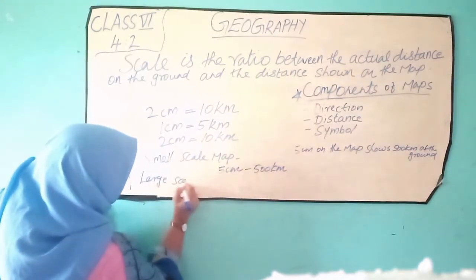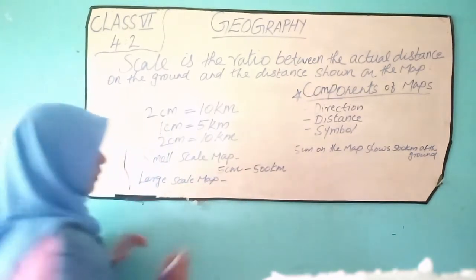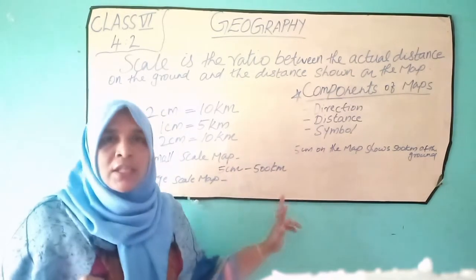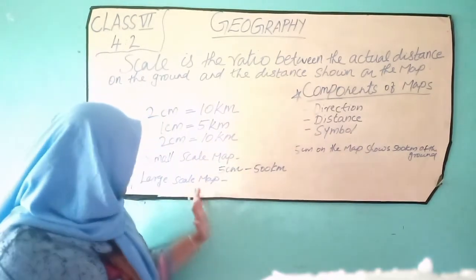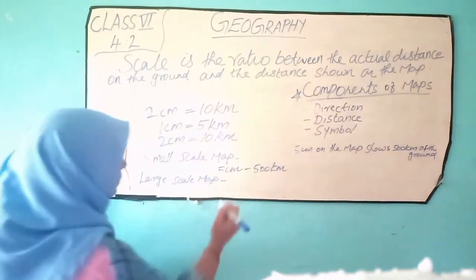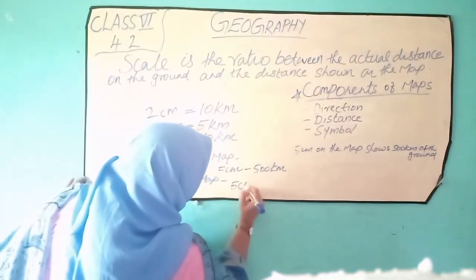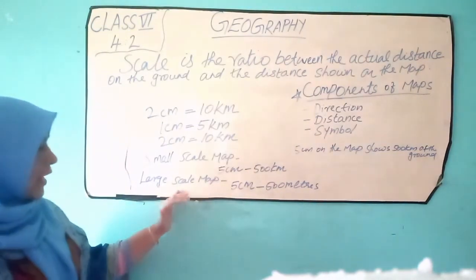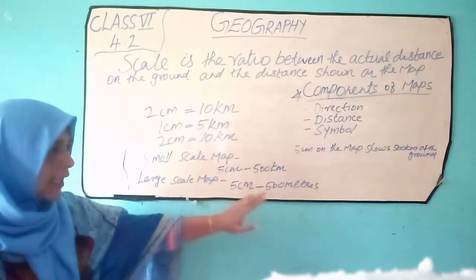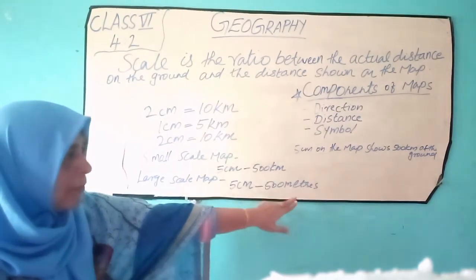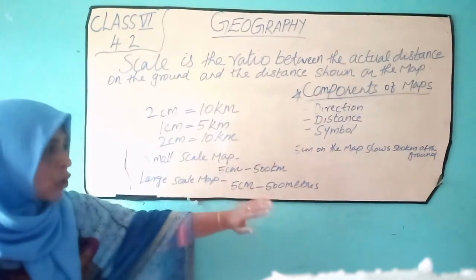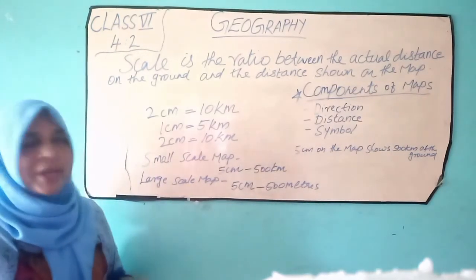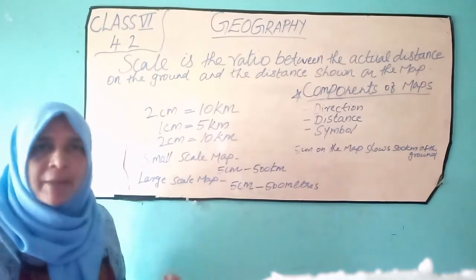The next one is large scale map. When a small area like a village or town is to be shown on a map, we use a large scale. That means 5 cm is equal to 500 m — 5 cm on the map shows 500 m of the ground. Large scale map gives more information than small scale map.